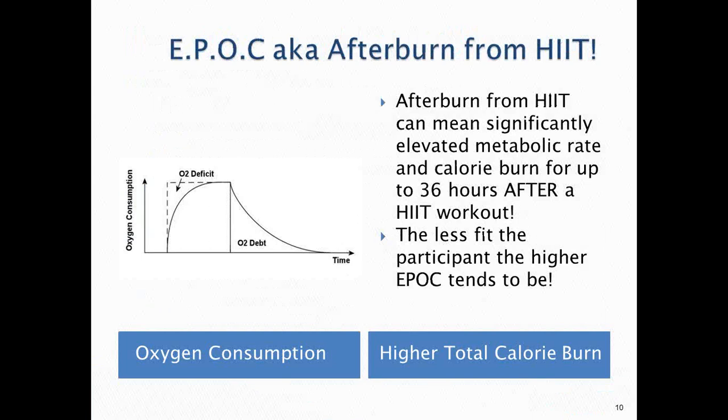One of the things I mentioned is the very high calorie burn after a HIIT workout — EPOC, which stands for Excess Post-Exercise Oxygen Consumption. To the consumer, I call this the afterburn. The afterburn from HIIT can mean significantly elevated metabolic rate and calorie burn for up to 36 hours after a HIIT workout. We're talking numbers like 100 to 250 extra calories over resting rate over the next 24 to 36 hours — a huge deal for their results. If you explain this and they understand it, they're going to like you and your programs a lot.